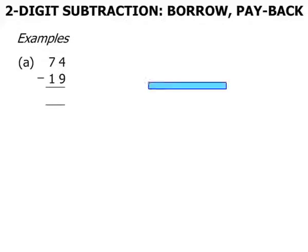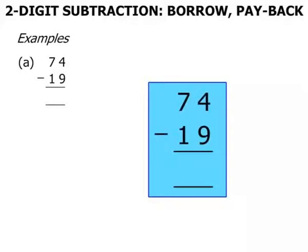In this lesson we do our two digit subtraction using the Borrow and Pay Back method. Examples. The first one there is 74 minus 19. So let's bring some working out space and write down that question again.